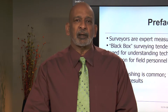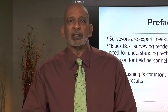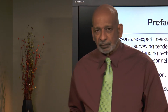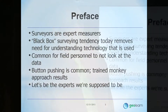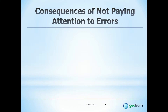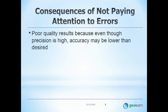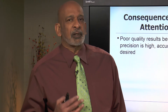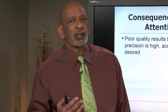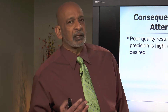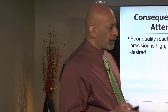A similar kind of thing can happen with surveying instrumentation because of its nature today. So I'd like to make the pitch that if we are experts, then let's be the experts that we are supposed to be. The consequences of not paying attention to errors means that poor quality results may be obtained even when precision is high. Accuracy may be lower than what is desired, and this can happen when not enough attention is paid to how the survey is being done or the quality of measurements being obtained.